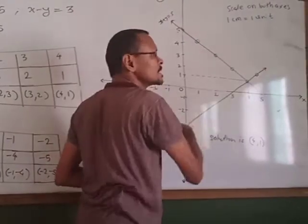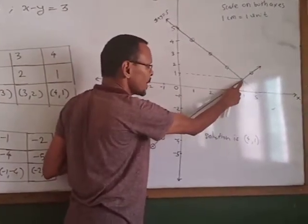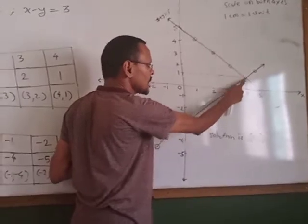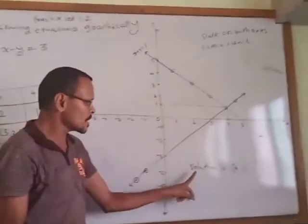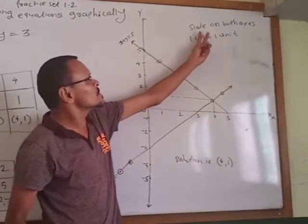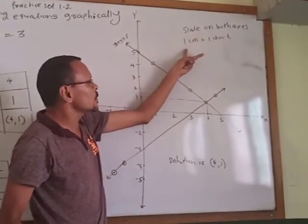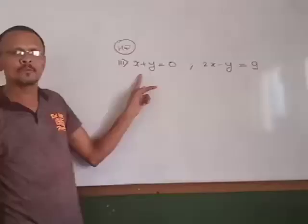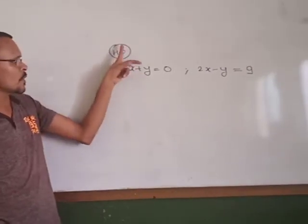So these 2 lines are intersecting at this point. Therefore perpendicular on x and y axis, therefore solution is x equals 4, y equals 1. Again scale on both axis: 1 centimeter equal to 1 unit.